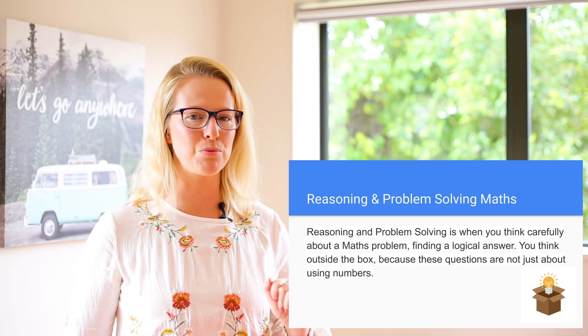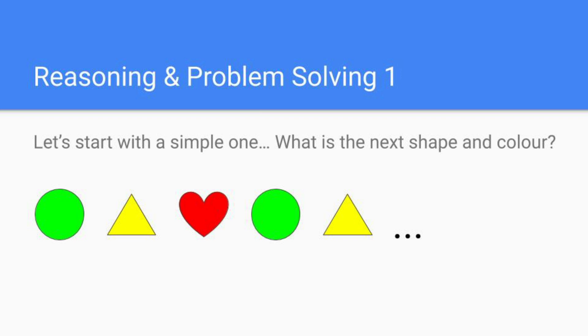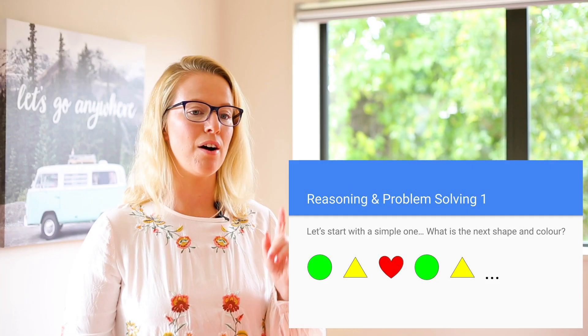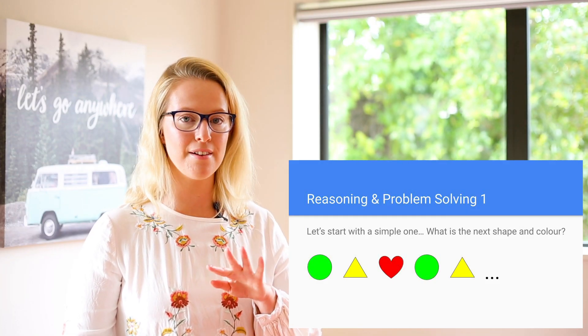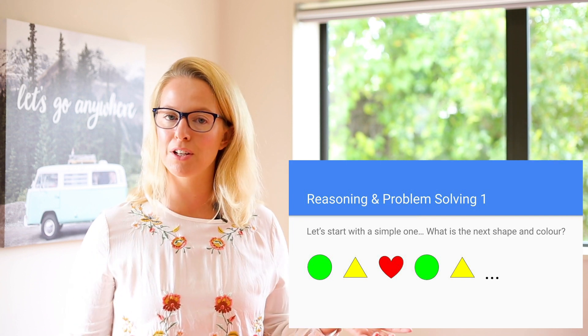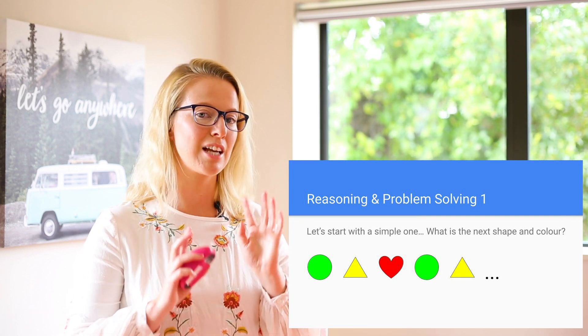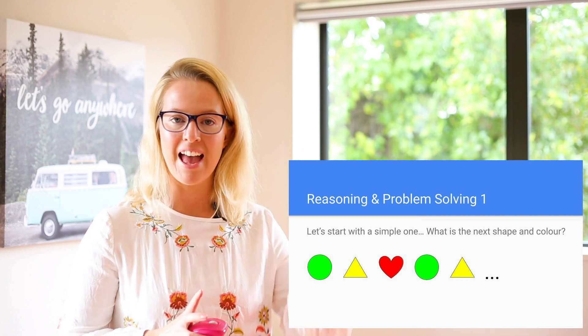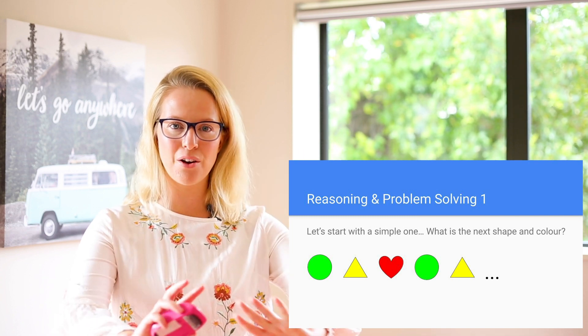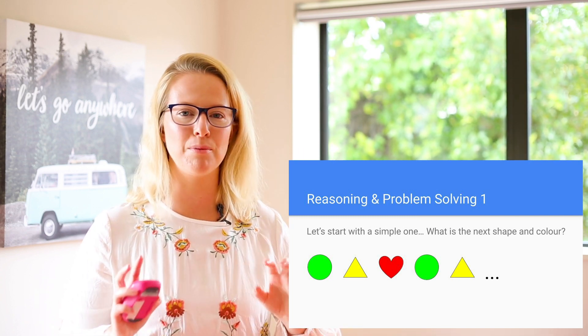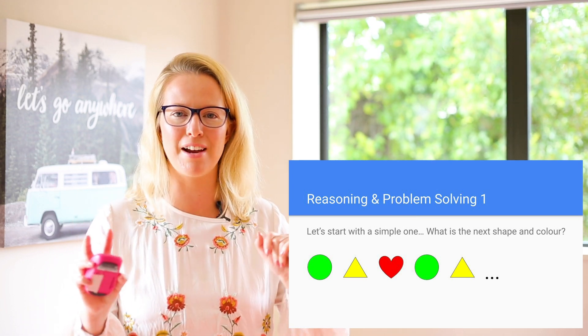So the first one, let's have a look. Let's start with a simple one. What is the next shape and colour? So you can see I've got three different shapes in a line and three different colours. Now I've got one, two, three, four, five of the shapes. So we're trying to figure out which shape is coming next and what colour will it be. Have a think. You can pause the video here if you need to but some of you might already be screaming the answer at me.